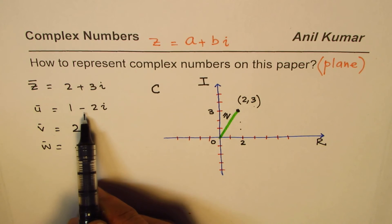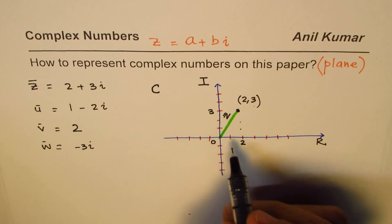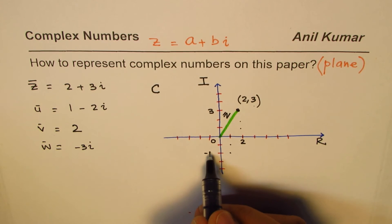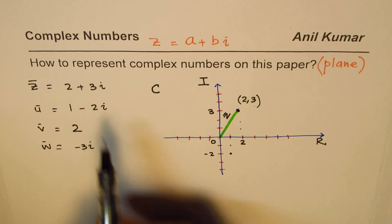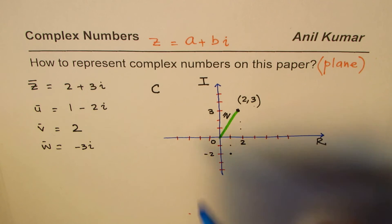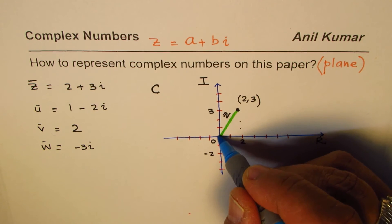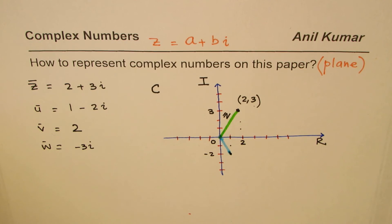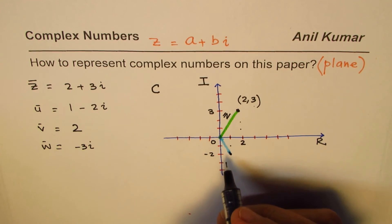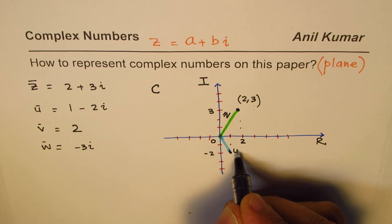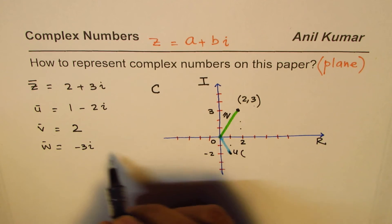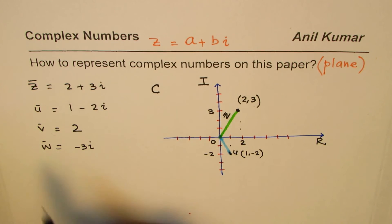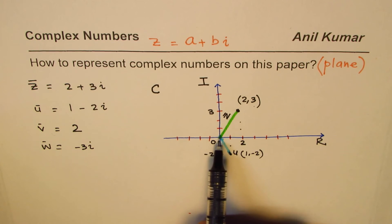Next is u = 1 - 2i. One is positive, so go one unit to the right. Minus 2i means go down two units. So that point represents 1 - 2i. From the origin, we have this line representing u. In coordinates, you could write this as (1, -2).